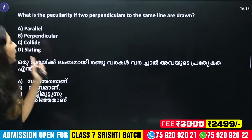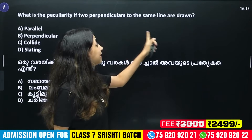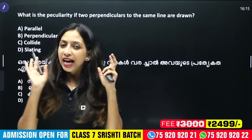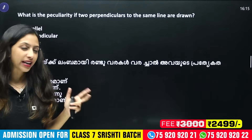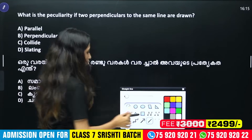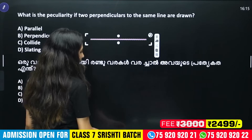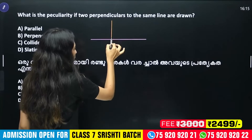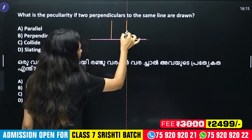What is the peculiarity if two perpendiculars to the same line are drawn? We have two perpendicular lines. A perpendicular looks like two lines meeting at a right angle. One line is the base line, and the other is perpendicular to it.